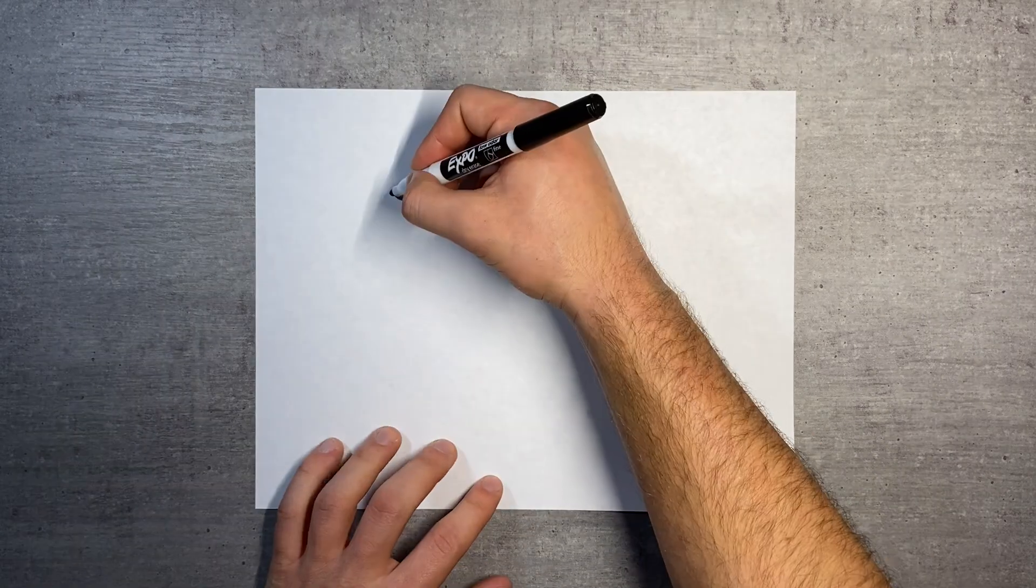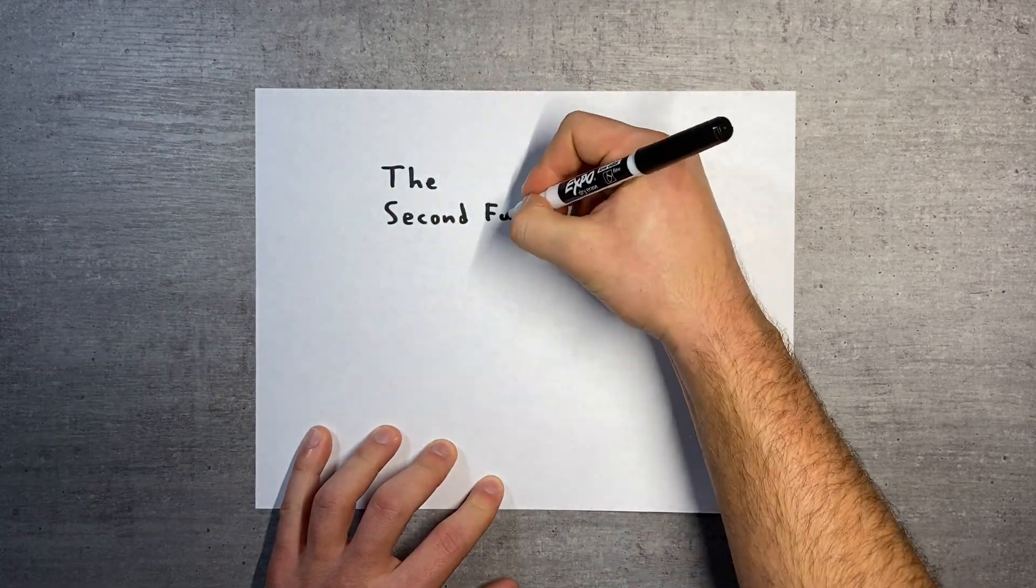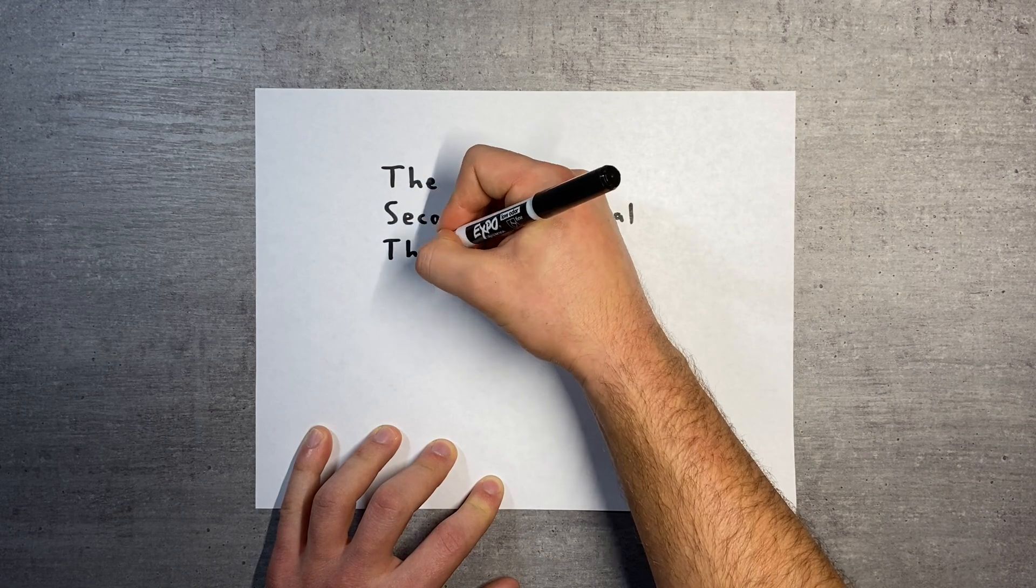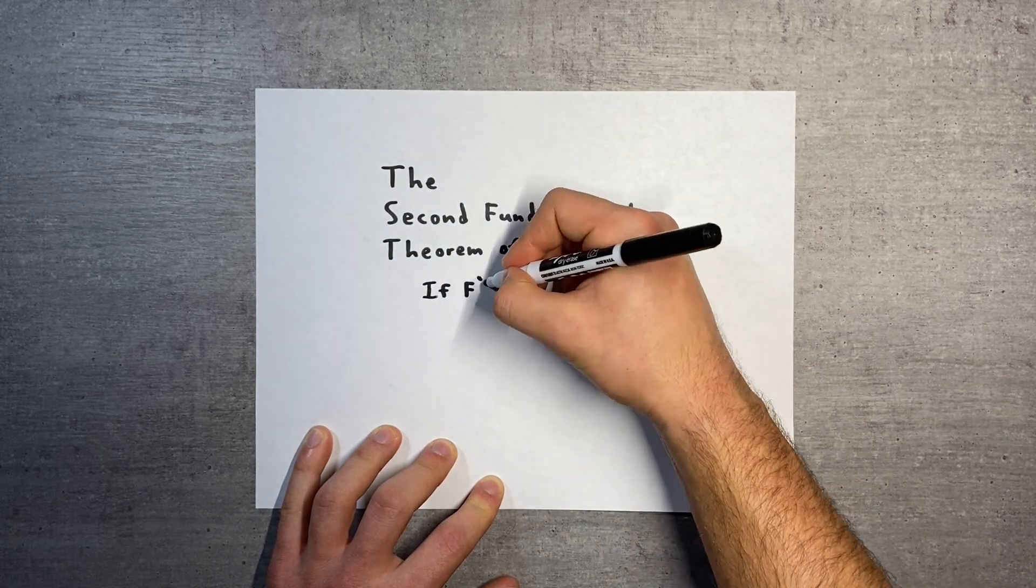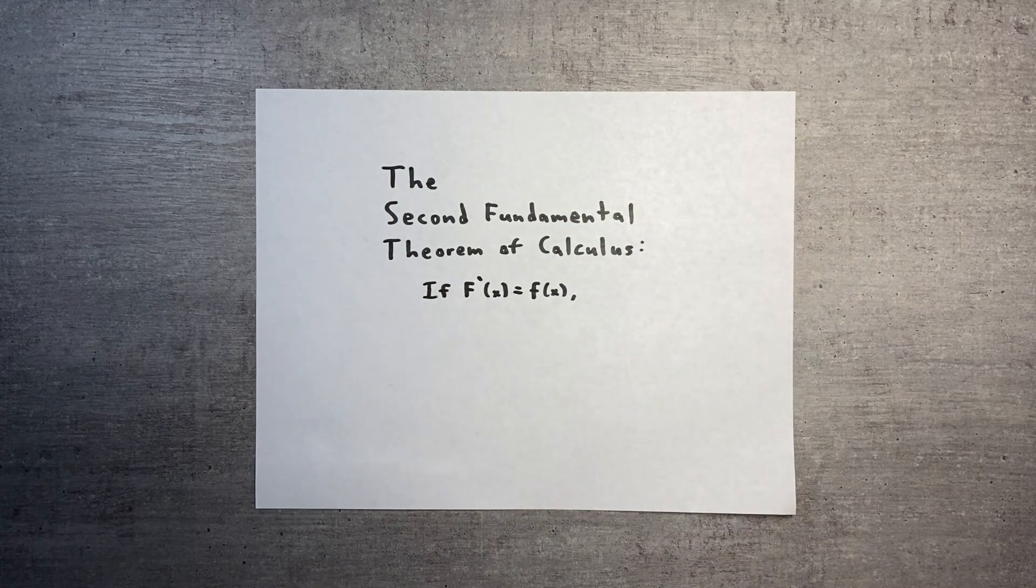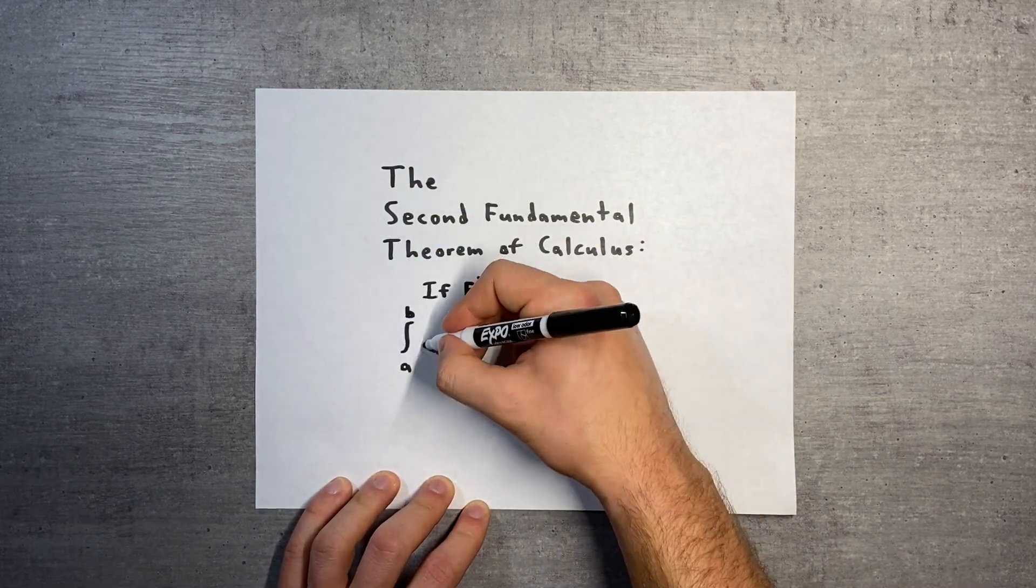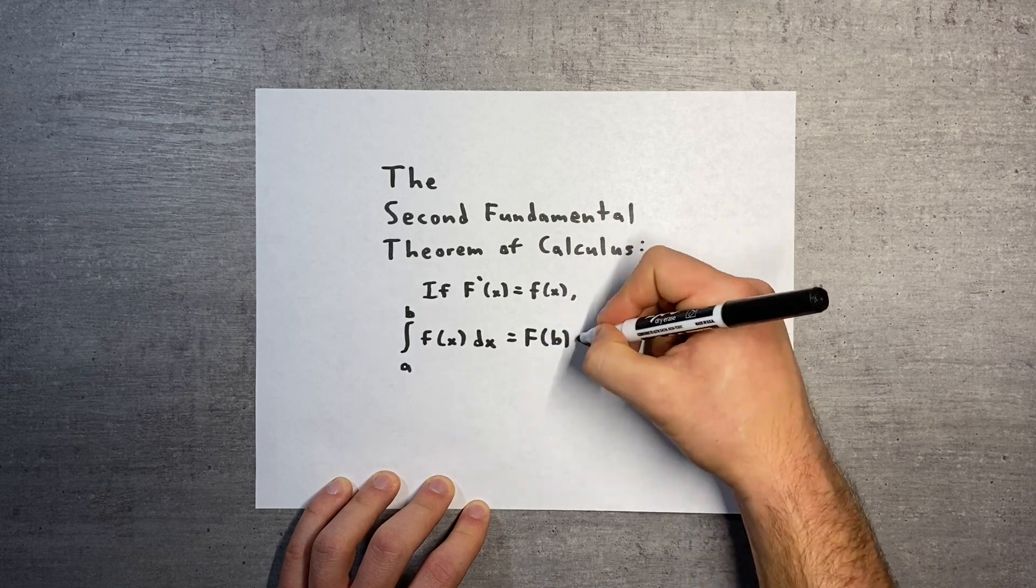While the first fundamental theorem of calculus is about taking the derivative of an integral, the second fundamental theorem is about taking the integral of a derivative. It says that if lowercase f is the derivative of capital F, then the integral from a to b of lowercase f is capital F of b minus F of a.